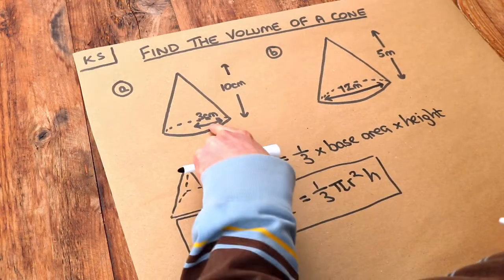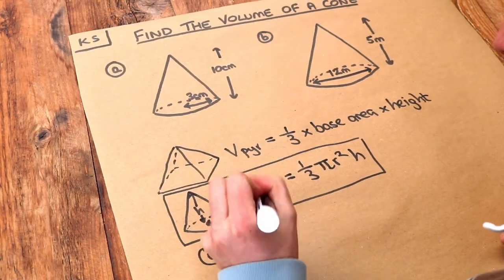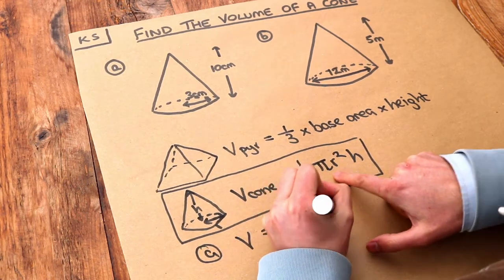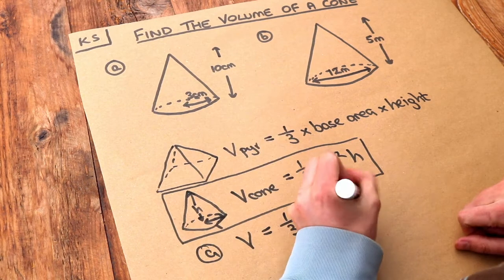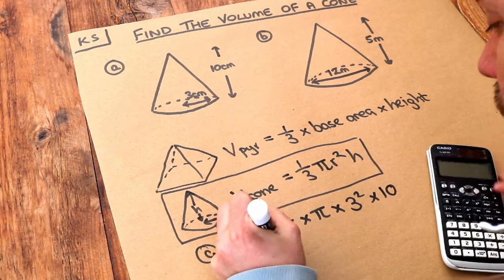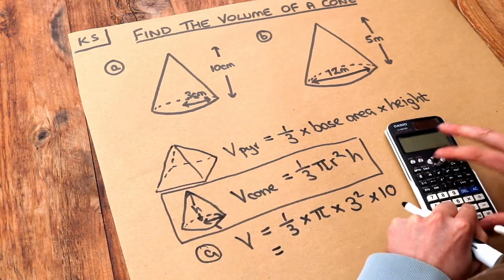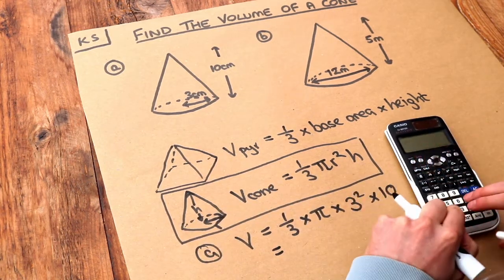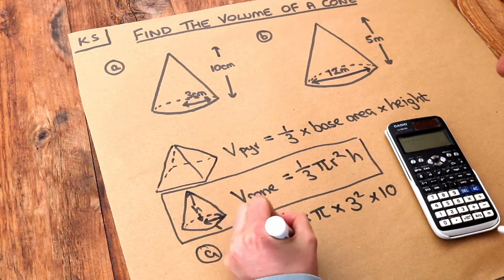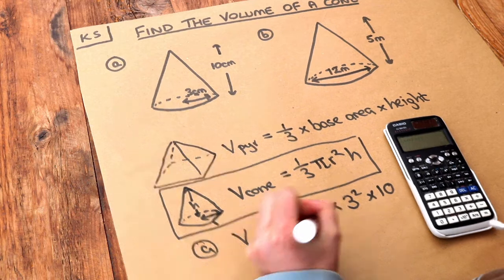For example A, the volume equals a third times π times the radius squared. So 3² multiplied by the height, which is 10. If we put that in our calculator: a third times π times 3² times 10, that gives us 30π, or